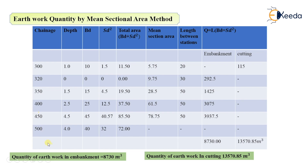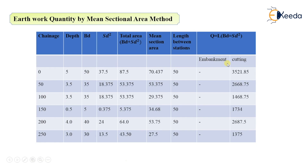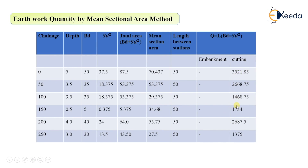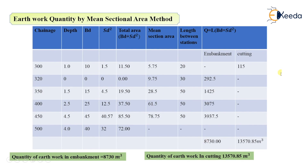After calculating all volumes, you add them up separately for embankment and cutting. The total embankment quantity is 8730 m³ and the total cutting quantity is 13570.85 m³. This was the video on earthwork quantity calculation using the mean sectional area method. Thank you.